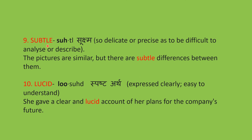The ninth word is 'subtle'. We don't say 'subtle' — it is 'subtle', with the B silent. It means so delicate or precise as to be difficult to analyze or describe. For example: 'The pictures are similar but there are subtle differences between them' — meaning there are small differences which are not clearly visible because they are very delicate.